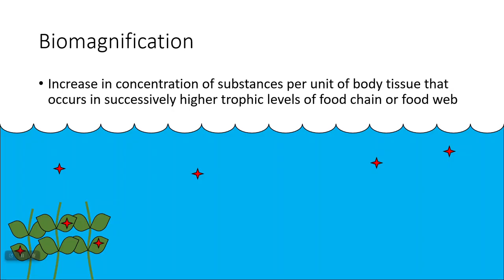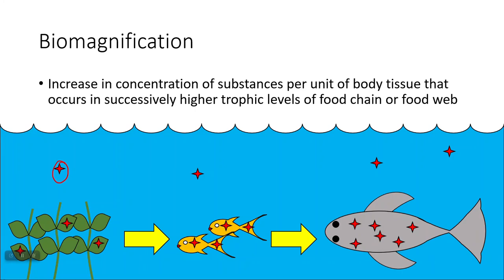Biomagnification happens when you move up the food chain. Here we have producers, and their concentration of the toxic chemical — represented by the red star — is about one per plant. When something in the food chain starts eating that producer, these small fish eat more than one producer per day, so they start building up higher levels of the toxic compound. As you move up the food chain, the larger consumer builds up even more.